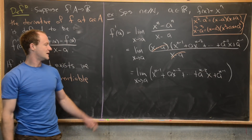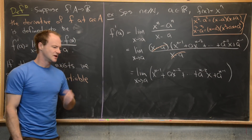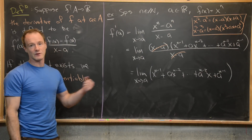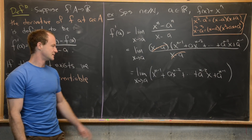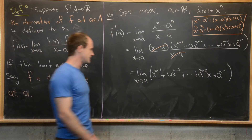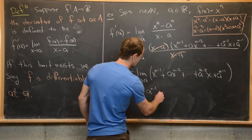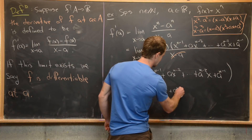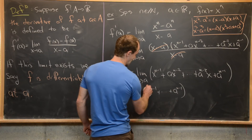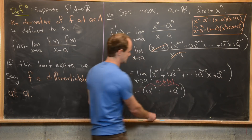We still have this x minus a in the denominator, so we can go ahead and cancel it with the numerator. We're left with the limit as x approaches a of x to the n−1 plus a times x to the n−2, all the way down to a to the n−2 times x plus a to the n−1. Now, each of these limits exist from our earlier study about limits, and we have the sum rule for limits, so all we really have to do is plug a into all of these. The big question is how many terms do we have.